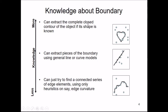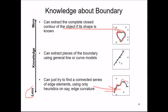Regarding knowledge about boundary: with more knowledge, we can extract the complete closed contour of an object if its shape is known. With less knowledge, we can extract pieces of the boundary using a general line or curve model, or try to find a connected series of edge elements using only heuristics on edge curvature. With good a priori knowledge about the shape, results are obviously much better.